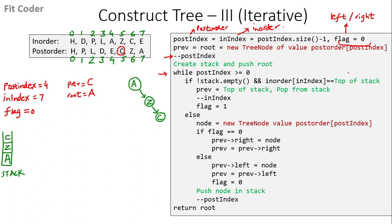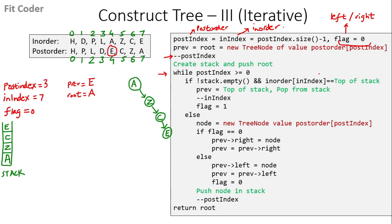In the next iteration, we compare top of the stack (E) to the inorder index, which is also E — they match, so we come inside the if statement. Previous becomes equal to top of the stack, which is E, and then we pop E from the stack. We decrement inindex, so it becomes 6, and flag becomes 1.